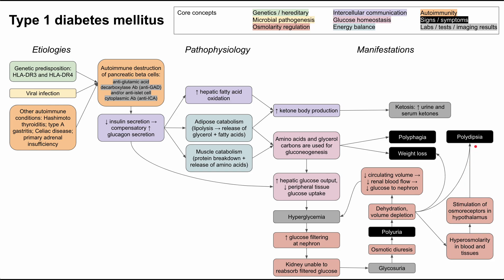This has been a short video on the mechanism of disease for type 1 diabetes. I hope this helps you appreciate the etiologies, the main pathophysiology, and some of the manifestations like polyuria, weight loss, polyphagia, and polydipsia. Thank you for listening.